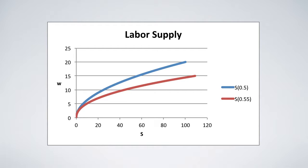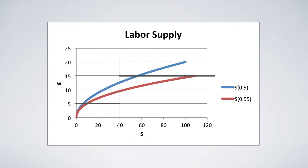The blue curve belongs to worker one, who is less efficient. For the same wage income, it works less. If signaling or schooling is set at S equal to 40, both workers obtain the higher wage income of $15.